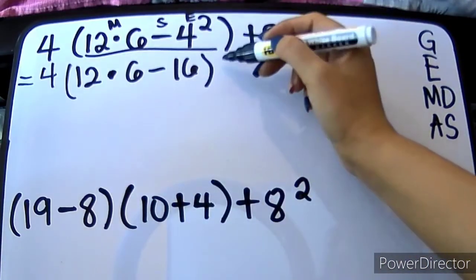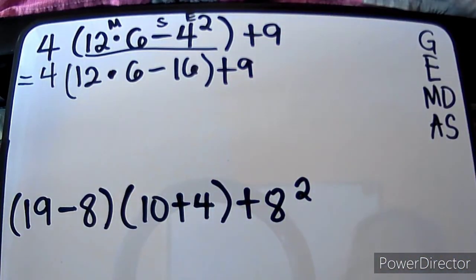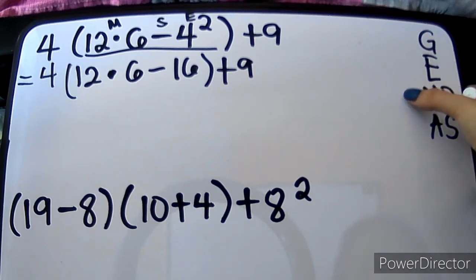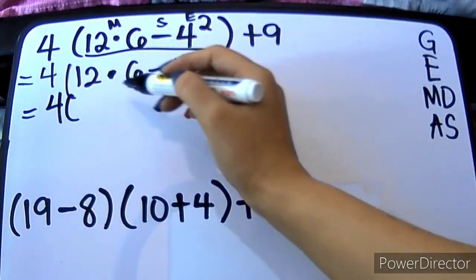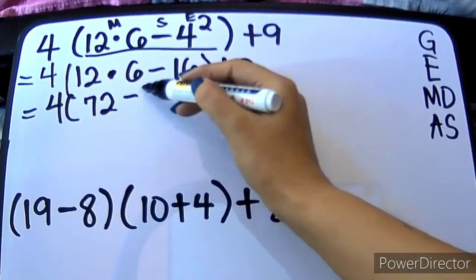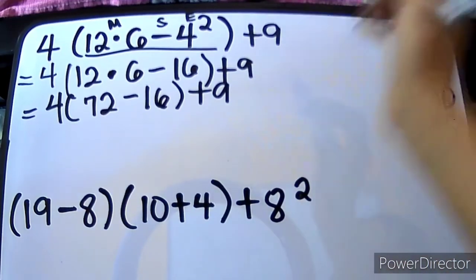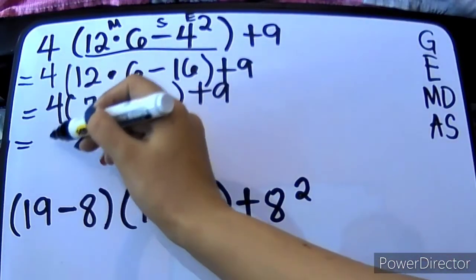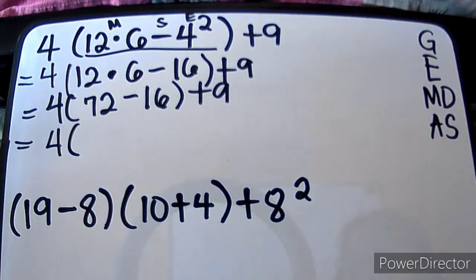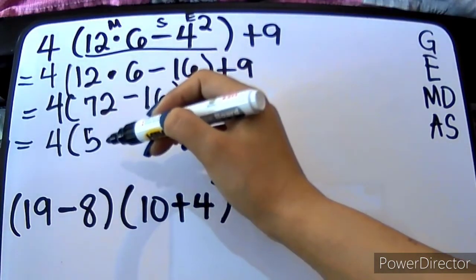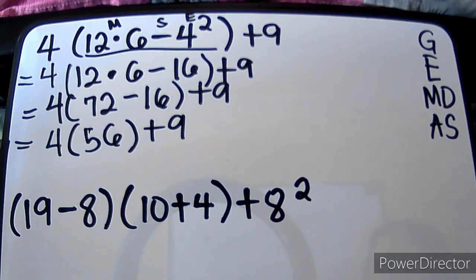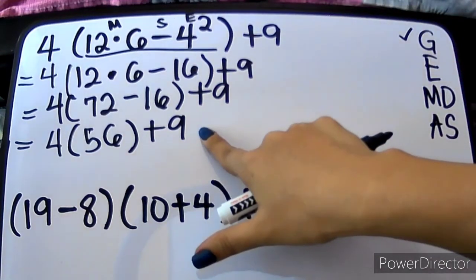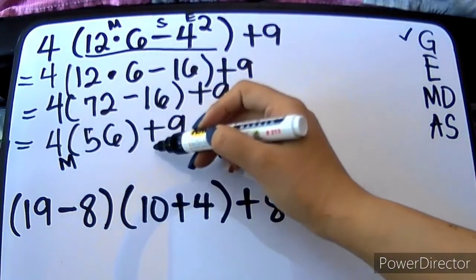And then, we only now have our grouping symbol — so kukopihin lang muna natin yung nasa labas: M and S. And as you can see, nandito yung M, nandito yung S, so dapat gawin muna natin yung M. So, 12 times 6 will give us 72, and then minus 16 plus 9. And we're still on G kasi may grouping symbol pa rin tayo. So we have 4 times — yung 72 minus 16 is 56. 56 plus 9.